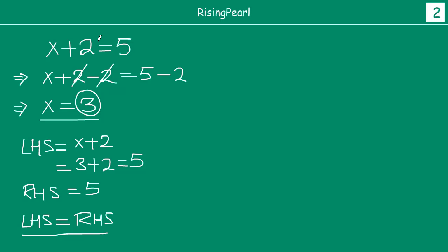Now, let us contrast this. Let us write a linear equation in two variables. This is a linear equation in two variables, as you have seen in the last webisode. Here we notice there are two variables, x and y. So when we say 'solution for this linear equation,' what does it mean? It means we need to find out values for both x and y.